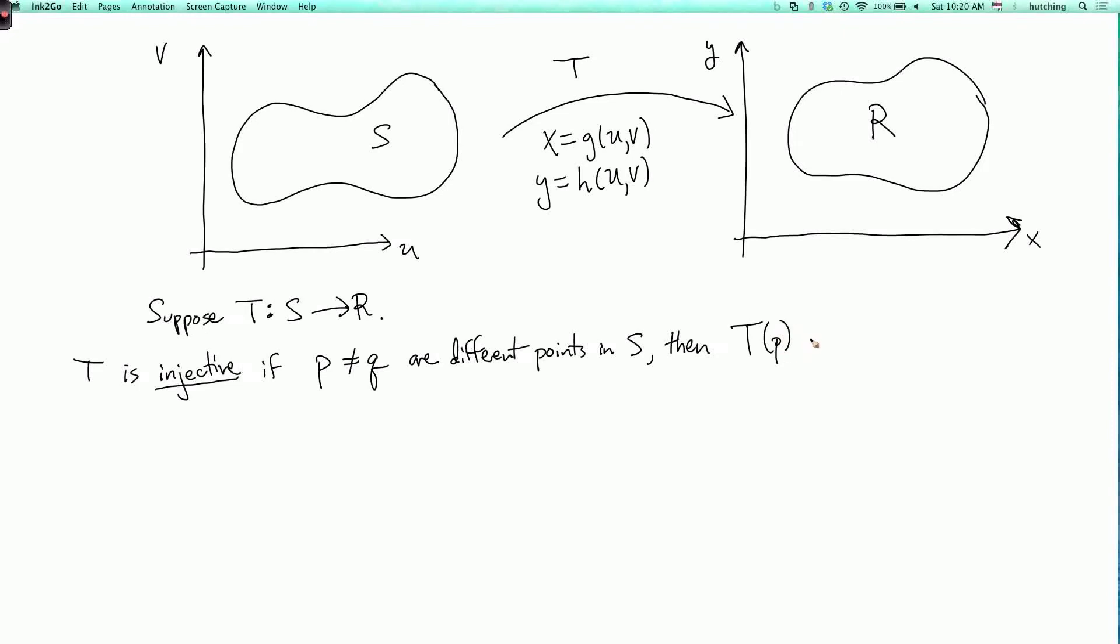then when you apply the transformation to them you get different points in R. So T of P is not equal to T of Q. So you can't have two different points in S mapping to the same point in R.